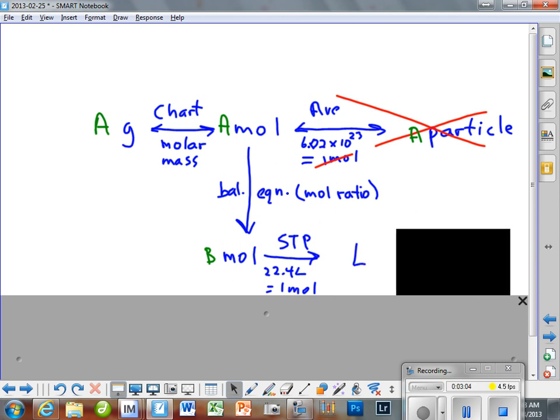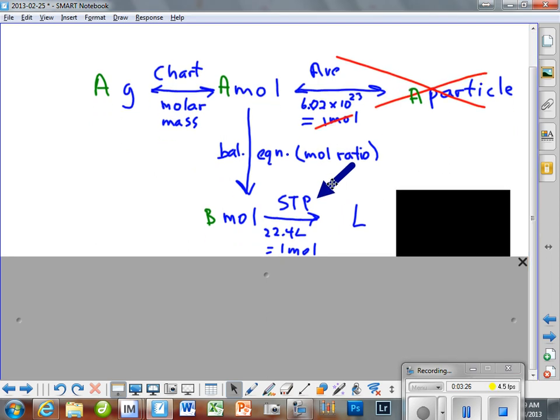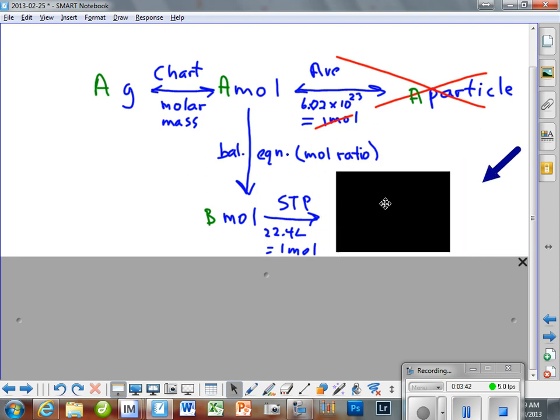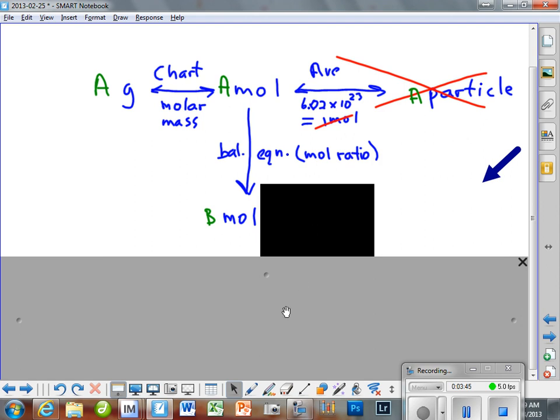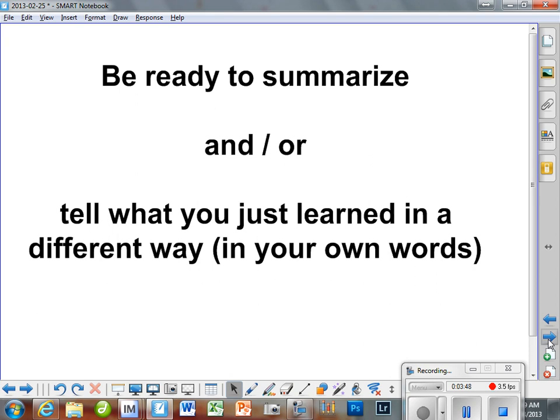Let's go ahead and move this over. This is the guy that we could use if we are at STP, if and only if. 22.4 liters equals one mole is only available if we have STP. So this little dude called STP gives us a wonderful opportunity to shortstop a lot of calculations that we would have to do with PV=nRT. Instead of PV=nRT, we can use this guy down here. That's what I was hoping to give you a big picture of.